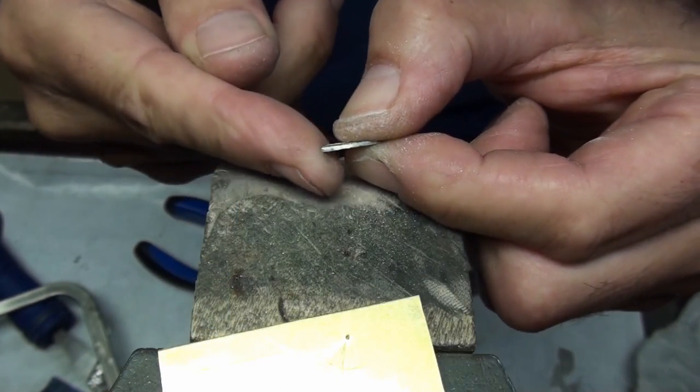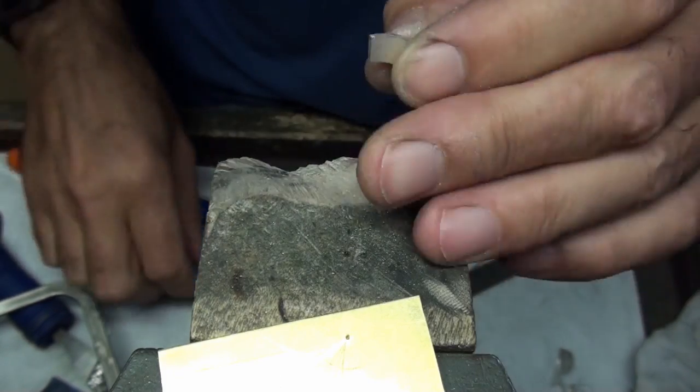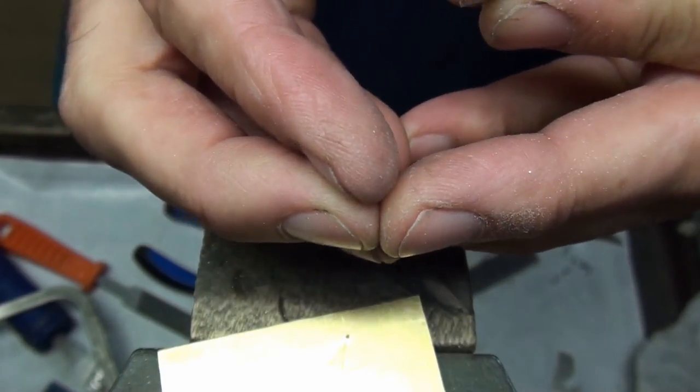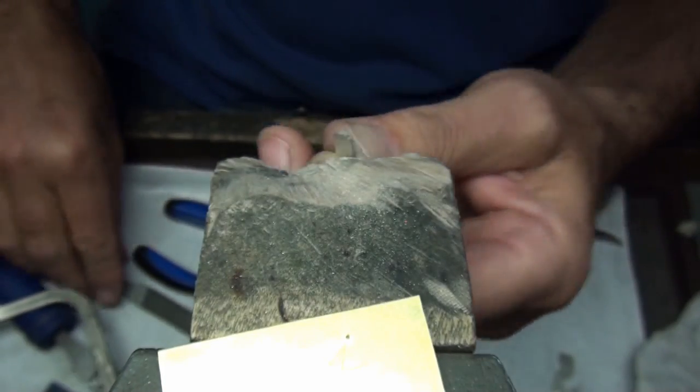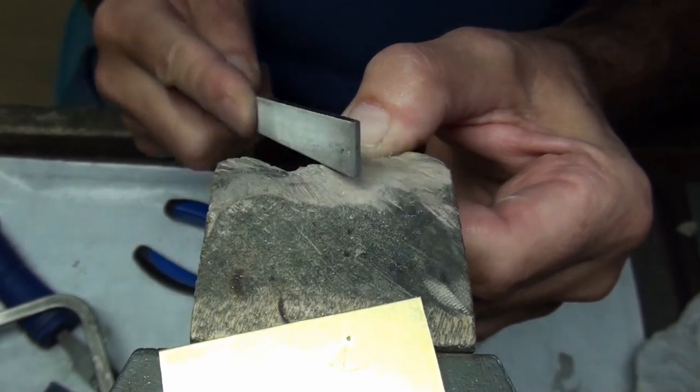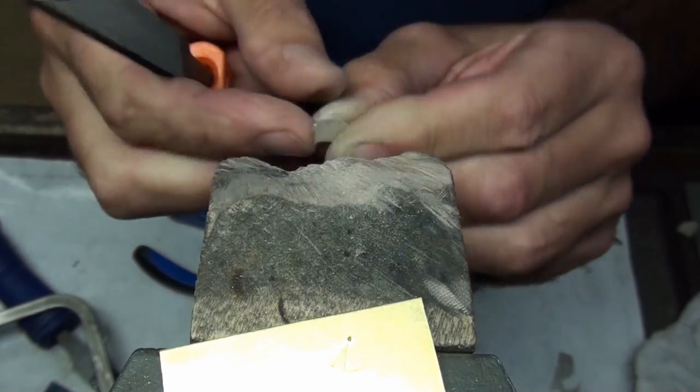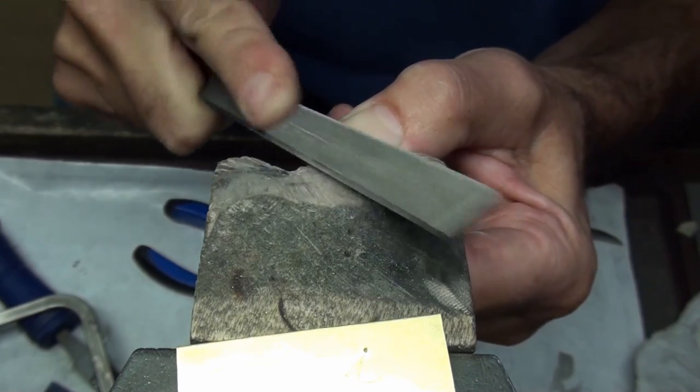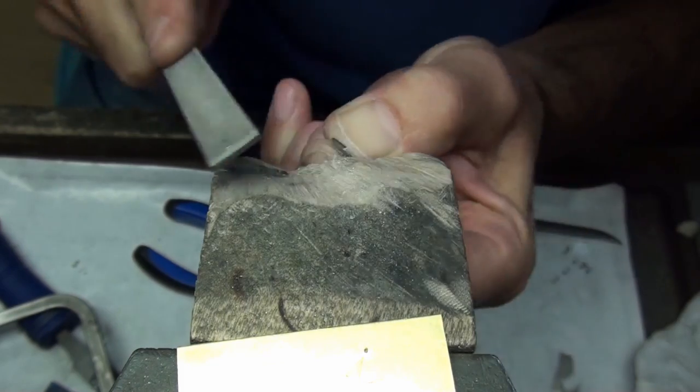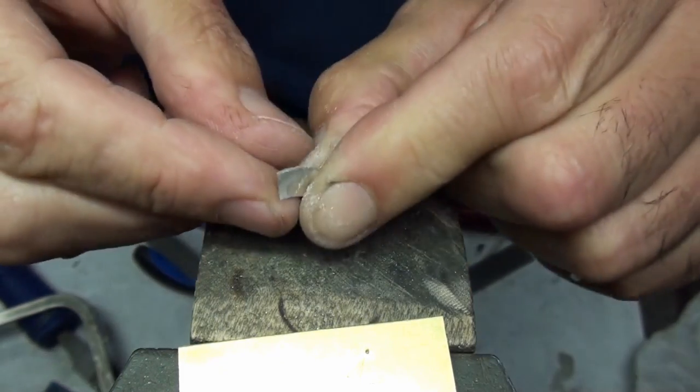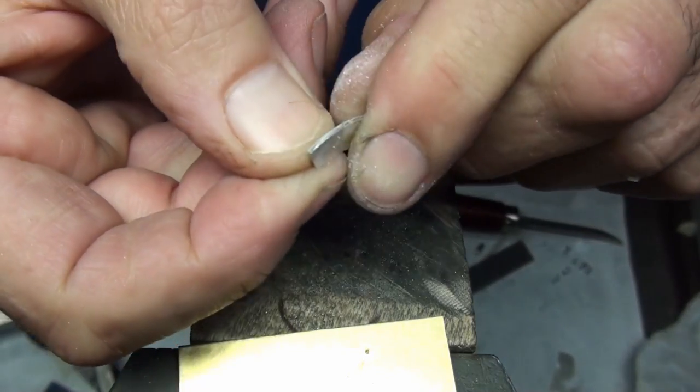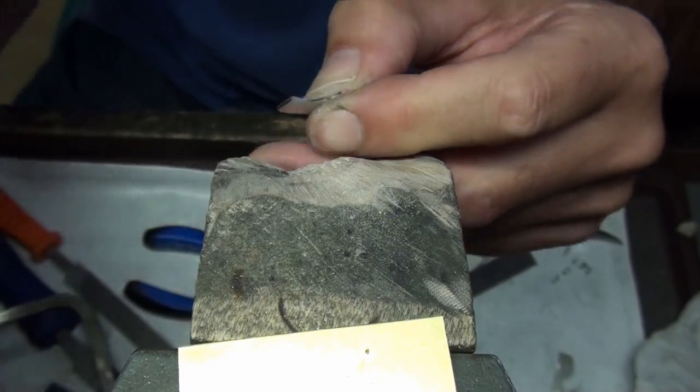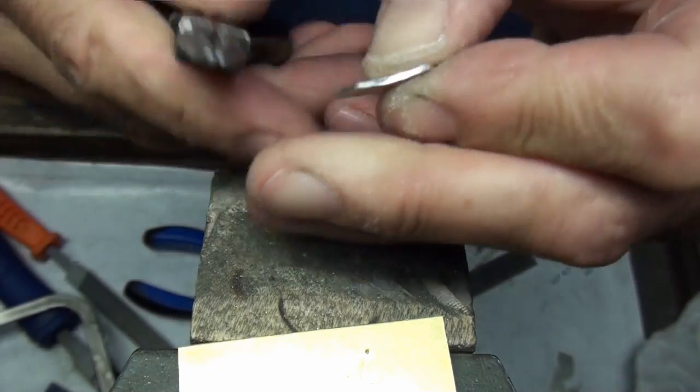Before we form it, I'm just going to file a slight angle on the ends there. Because when the two ends come together, they meet up at a slight angle. They don't meet up straight. We just need to file a very slight angle so that when it comes together we'll have no gaps. Make sure that you fold or bend the setting in the right direction now. I've got the angle going inwards like that.